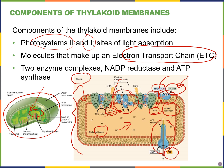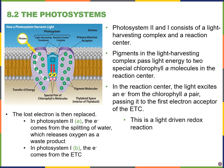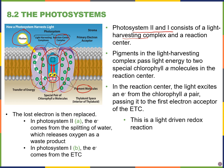Photosystems 2 and 1 are both composed of a light harvesting complex, shown in the purple areas. These are proteins that have pigment molecules embedded within them that can absorb the energy from light. In the center we also have a reaction center complex, which includes a pair of chlorophyll a molecules and something known as a primary electron acceptor.